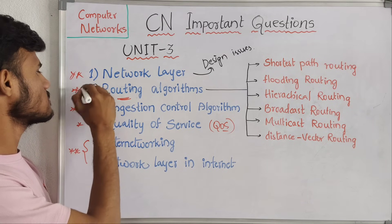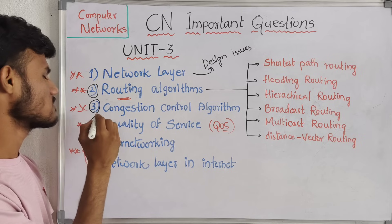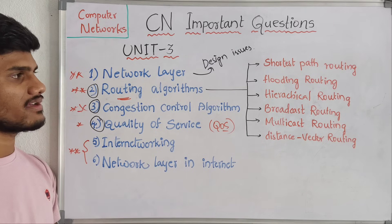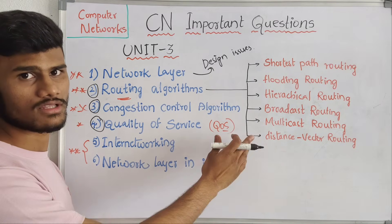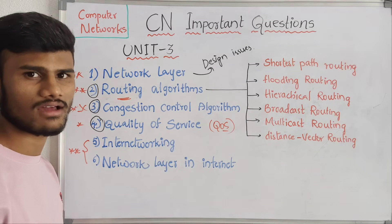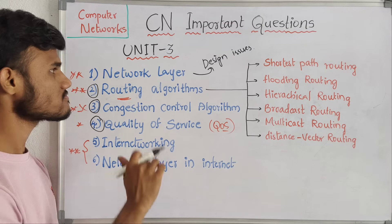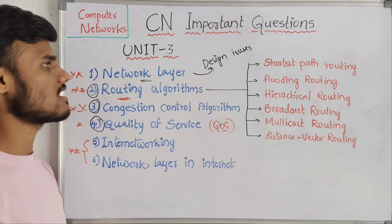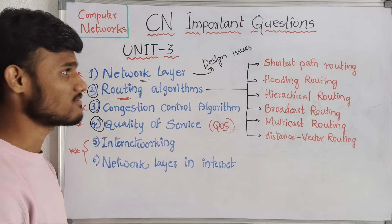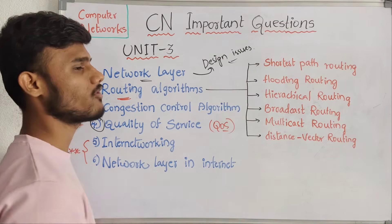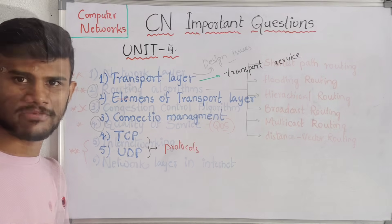So this is all about the third unit. In this third unit you must learn routing algorithms, congestion control, and quality of service — these are three very very important questions. Network layer design issues also need to be covered, noting key points.